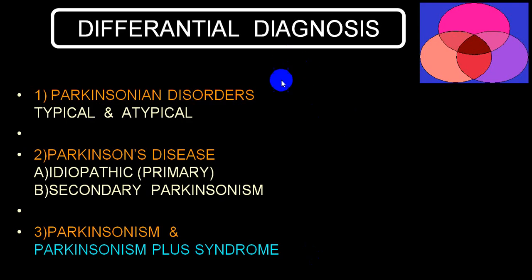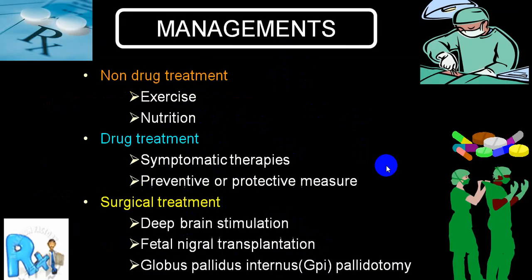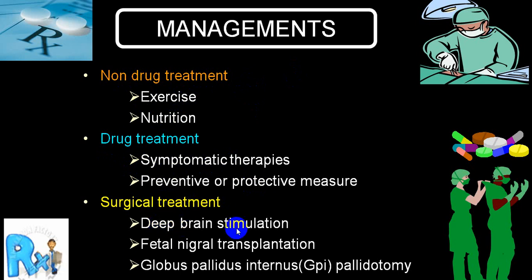In management, first are non-pharmacological treatments — exercise and nutrition. Among pharmacological treatment, mainly for symptomatic relief and neuroprotective purposes. If those don't work, surgical interventions include deep brain stimulation, trials of fetal nigral transplantation, and globus pallidus pallidotomy — these are different ways of treating Parkinson's disease.